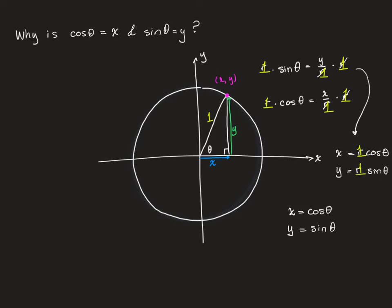So x equals cosine theta, y equals sine theta is simply a special case of x equals r cosine theta and y equals r sine theta.